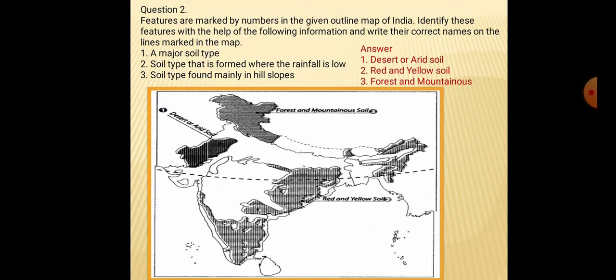Third type: soil found mainly in hill slopes means mountainous region. The soil is forest and mountainous soil, which is found in Jammu and Kashmir, Uttarakhand and Himachal Pradesh.